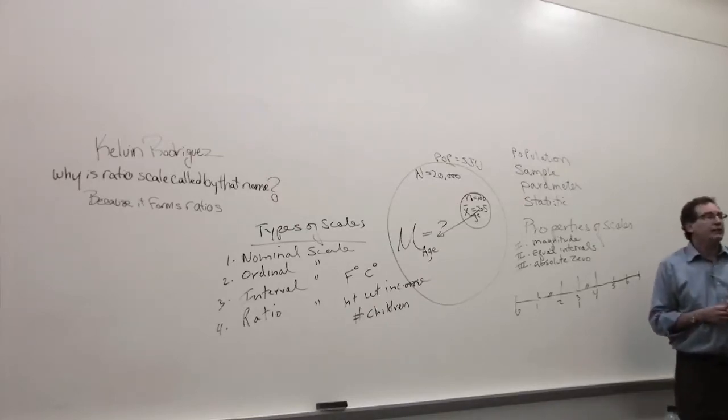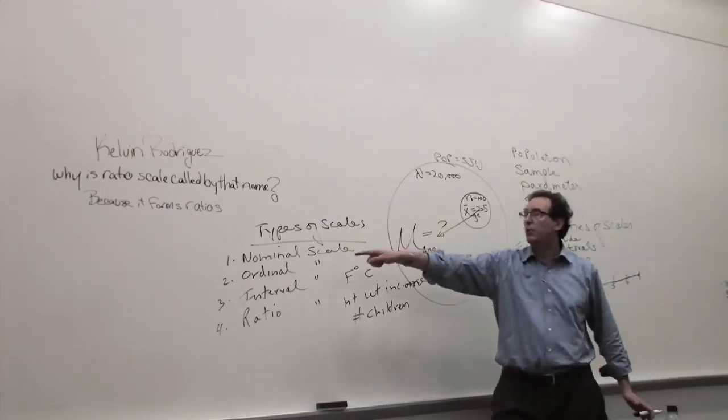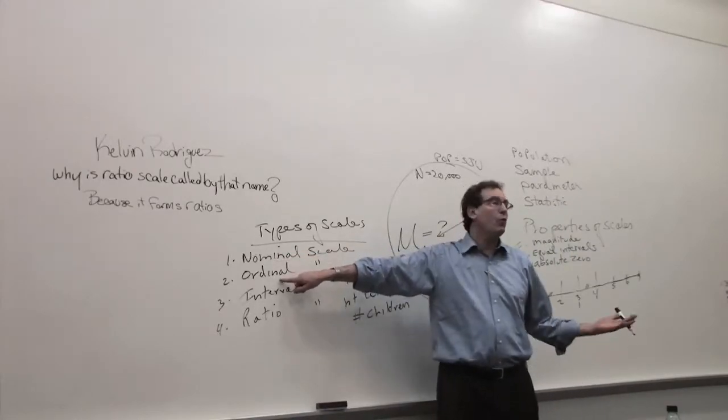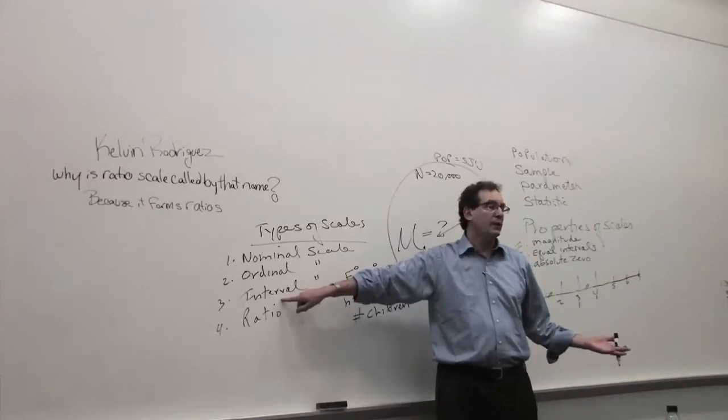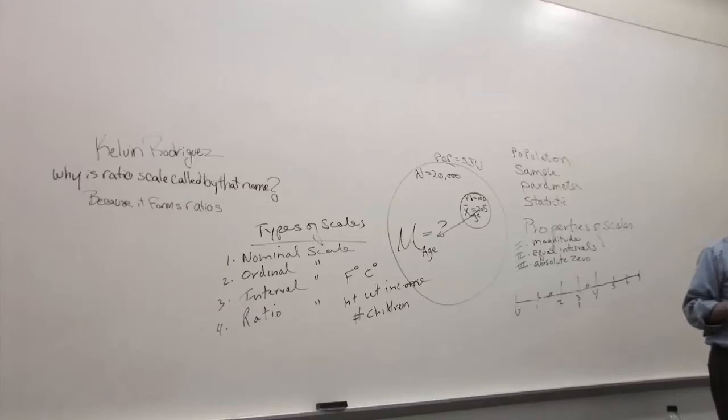So the question is, and this is the question we're up to in the homework, why is it called a ratio scale? I told you why it's called a nominal scale—for the word nominal, name. I told you why it's called an ordinal scale, because of the word order. I told you why it's called an interval scale, because of equal intervals. So why is it called a ratio scale? And the answer again was on the board, I think twice already, and Kelvin said that it's because it forms ratios.